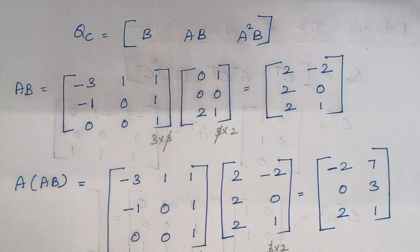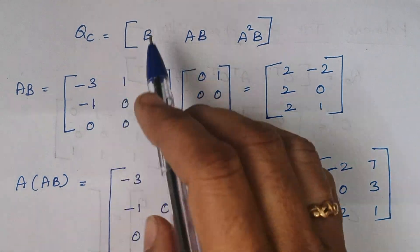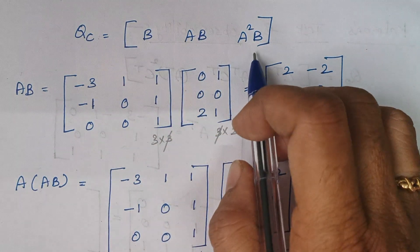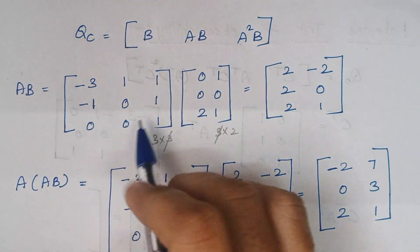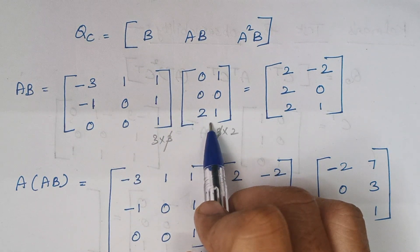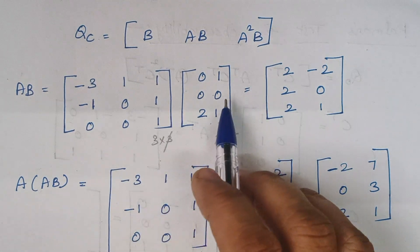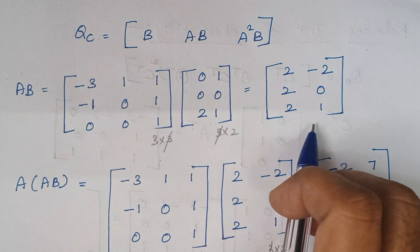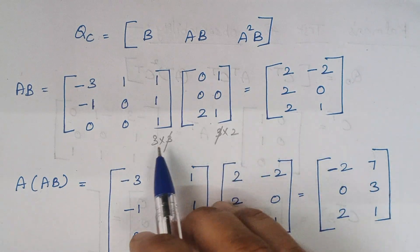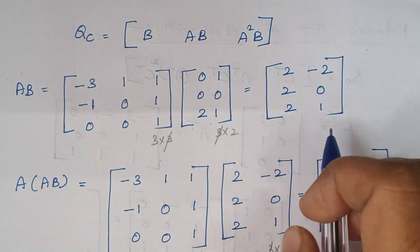Now we are proceeding with Kalman's test. For Kalman's test we have to frame a matrix QC, and this QC will be having B, AB, and A²B. The first step is to compute AB — we know the A matrix and B matrix, just multiply them. A is a 3×3 matrix and B is 3×2, so the output matrix will be 3×2, having 3 rows and 2 columns.